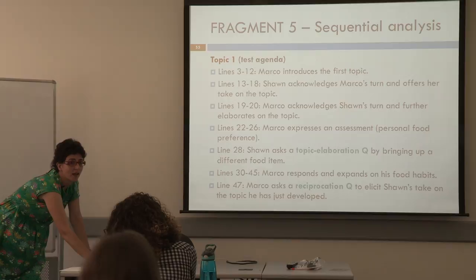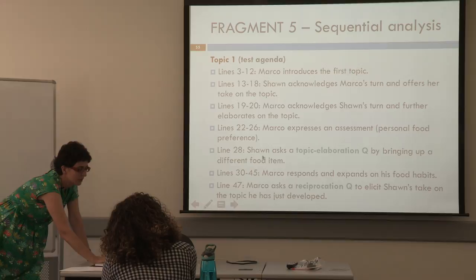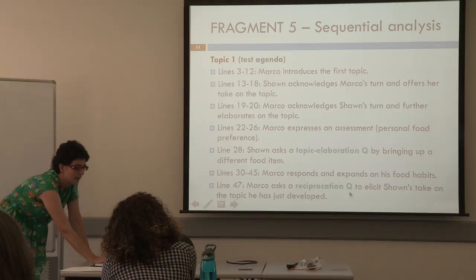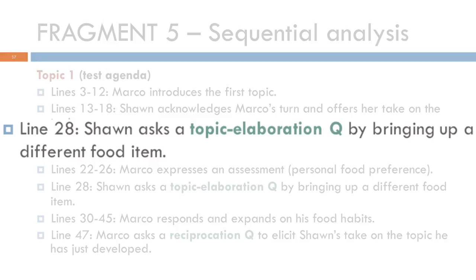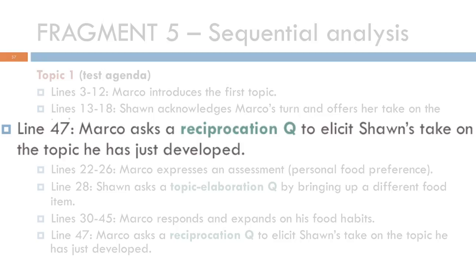Their interaction is very different from the 101 students' — there are virtually no questions. At one point she asks about a food topic, and he asks a reciprocation question — but it's used differently. It's not a simple reciprocation that elicits the exact same answer. Instead, it's more like: 'I'm talking about food in general, so what about your take on it?' He's asking for his partner's perspective on something he had already developed, and it was not prompted by a question.